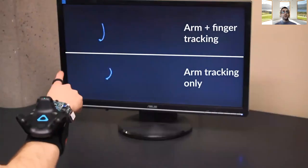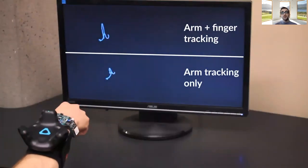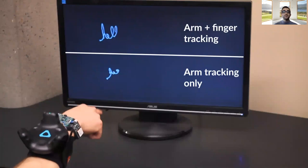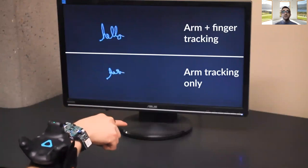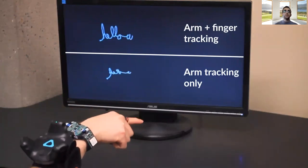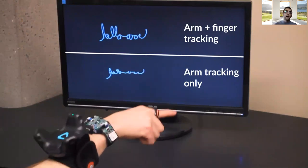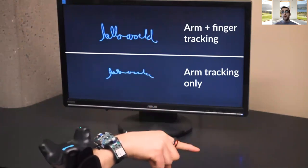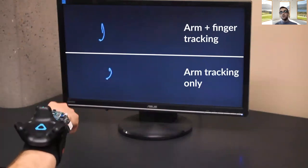By combining our ring with an arm or wrist tracking solution, pointing can be done in absolute coordinate system. Here we show a drawing example using wrist-only motion from the HTC Vive Tracker on the bottom and wrist plus ring on the top. You can see that our ring results in a significantly more useful signal.